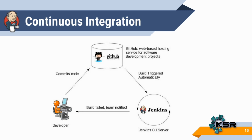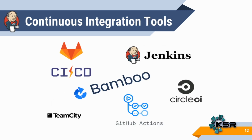There are several tools that support continuous integration, not only Jenkins. We have the CI/CD for GitLab, Bamboo, TeamCity, GitHub Actions, and CircleCI. Most companies are very frequently using Jenkins and GitLab CI/CD pipelines across many organizations.